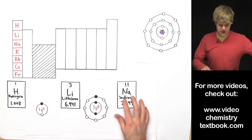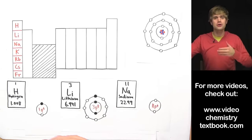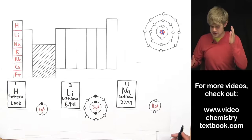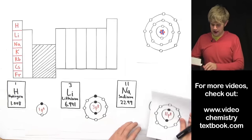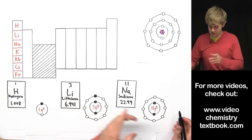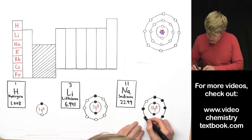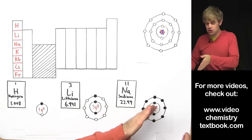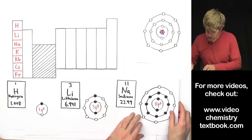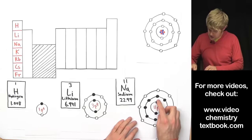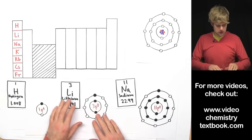Now let's look at sodium. Sodium has 11 protons in its nucleus, and since it's neutral, it also has 11 electrons. We fill one and two in the first energy level — now that's full — then we fill three through ten in the second energy level. Those are all full but we still have more electrons, so we bump to the third energy level and add one more electron there.